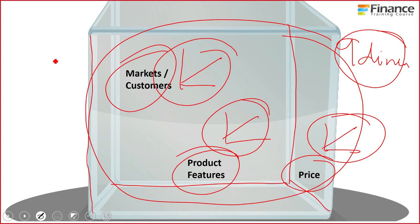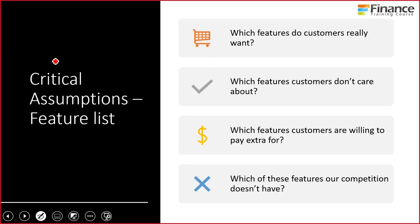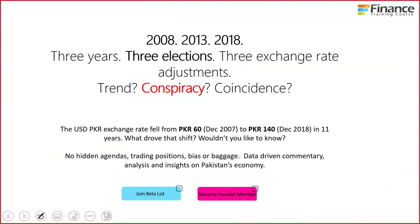This framework: your assumptions are essentially in the areas of markets and customers, products and features, and pricing. You should be able to list down at least 10 assumptions each for each of the dimensions — which basically means there are at least 30 experiments you need to conduct to validate your underlying assumptions. Just like if you can't find a single customer you don't have a market, similarly if you can't identify 30 assumptions, you're not in good shape — you haven't done a good enough job thinking about this.